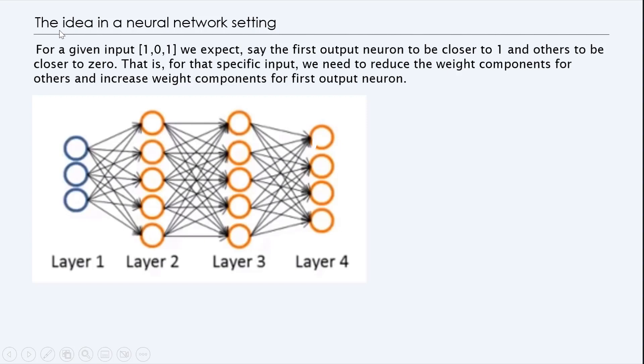So the idea of a neural network setting is that for a given input 1, 0, 1, we expect the first output neuron for this one to be close to 1, and the others to be close to 0. So that's for a specific input like this with three things. We need to reduce the weight components for others and increase the weight components of the first output neuron.